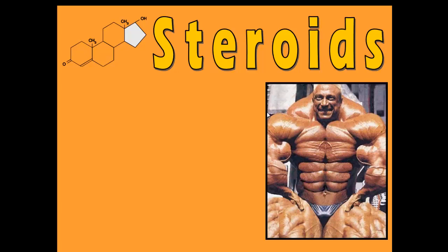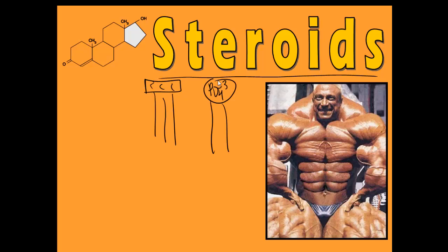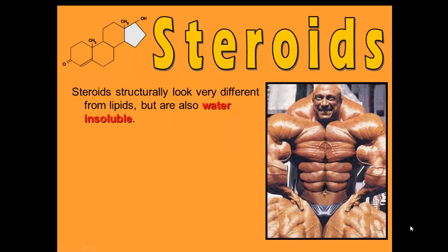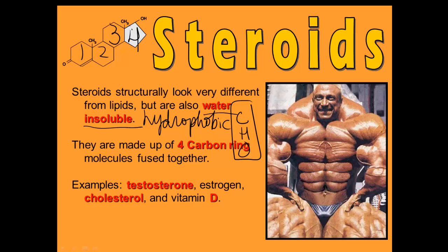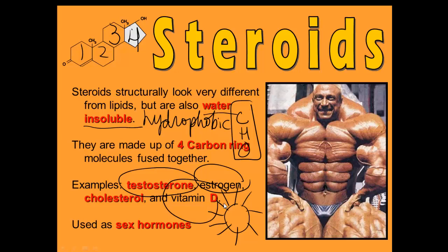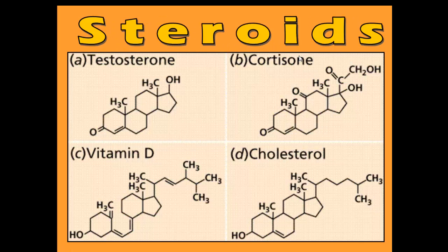Steroids are also a fat. They look very different from the other lipids. They're water insoluble, which means they're hydrophobic. They're also made up of carbon, hydrogen, and oxygen, not in a set ratio — so they are a lipid. Some examples of steroids include testosterone, estrogen, and vitamin D. Testosterone and estrogen are sex hormones. Steroids are very important to living creatures. If you see a picture with that characteristic ring structure, you're looking at a steroid.